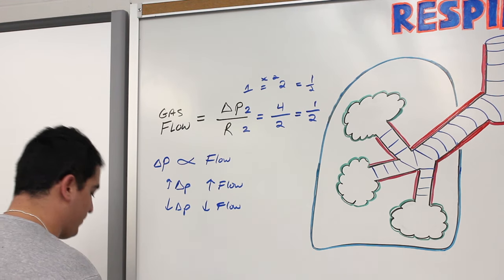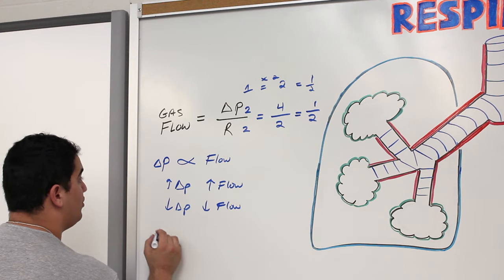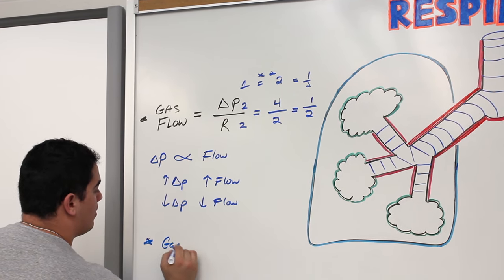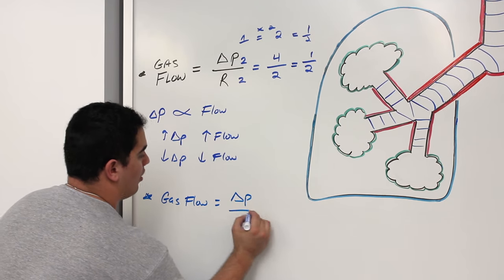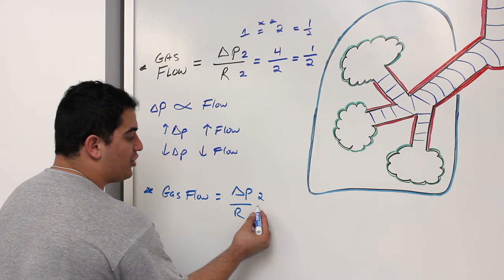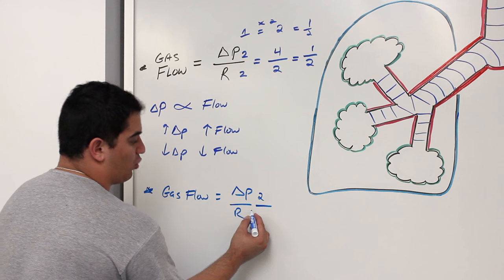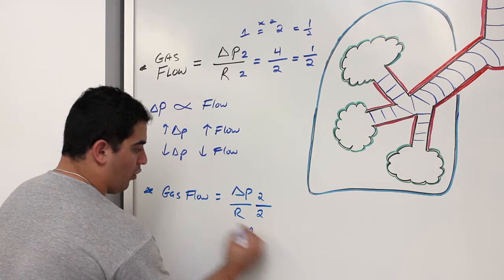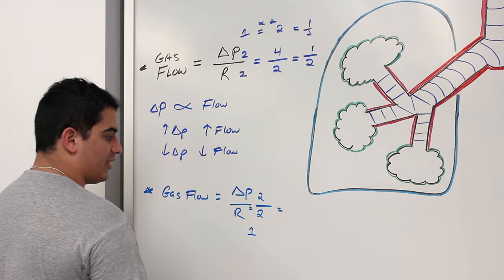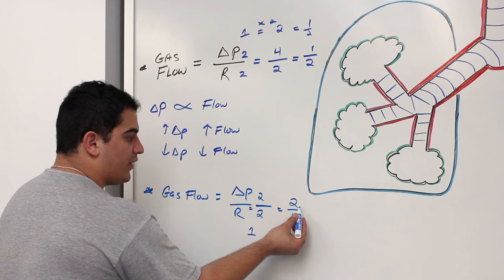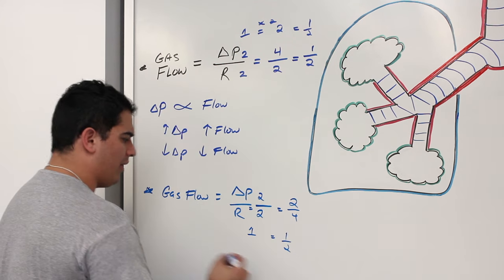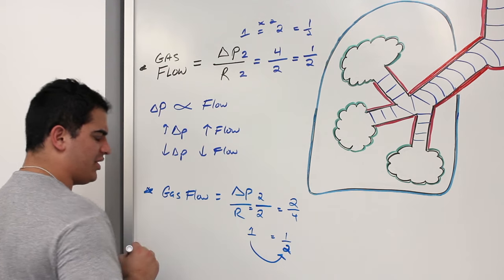Now let's do this for resistance. Gas flow = ΔP / R. Let's keep pressure constant. Originally resistance is 2, giving flow = 2/2 = 1. If I increase the resistance to 4, now it's 2/4 = 1/2. So flow decreased. If I decrease resistance to 1, then 2/1 = 2, so flow went up. Resistance is inversely proportional to flow: decrease resistance, increase flow; increase resistance, decrease flow.